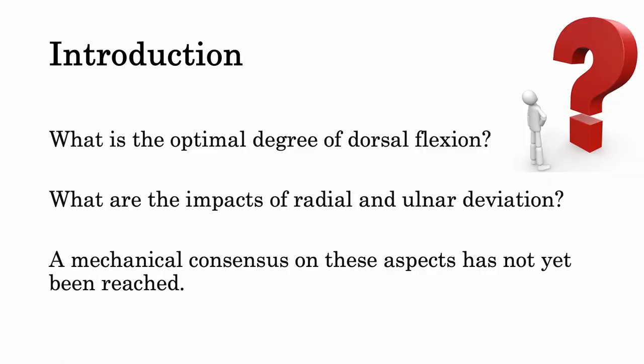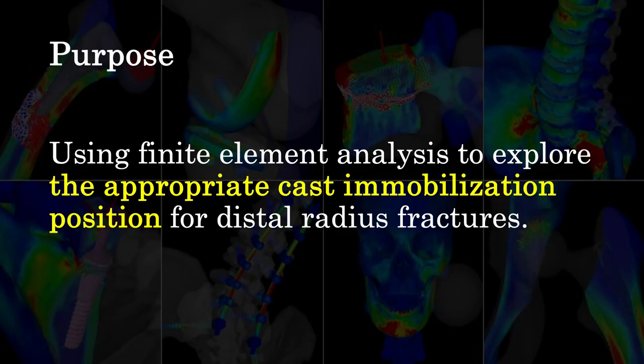What is the optimal degree of dorsal flexion? What is the impact of radial and ulnar deviation? A mechanical consensus on these aspects hasn't yet been reached. The purpose of this study is to use finite element analysis to explore the appropriate cast immobilization position for distal radius fractures.